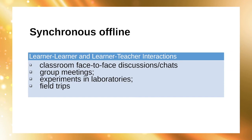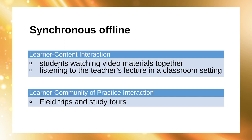The usual synchronous and offline learning event happens in the classroom or face-to-face discussions. Under this context, we have face-to-face classroom discussions and chats, group meetings, experiments in laboratories, and field trips to facilitate communication and group work among students. For synchronous and offline learner-content interaction, we are familiar with students watching video materials together or listening to the teacher's lecture in the classroom setting. Field trips and study tours are useful examples of synchronous and offline learner-community-of-practice interaction.